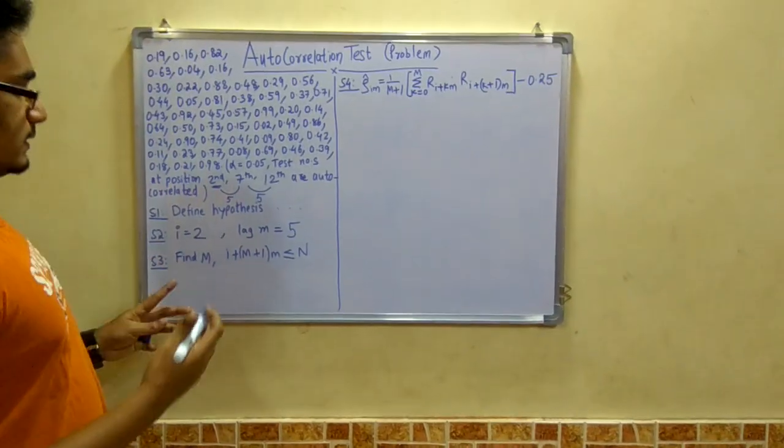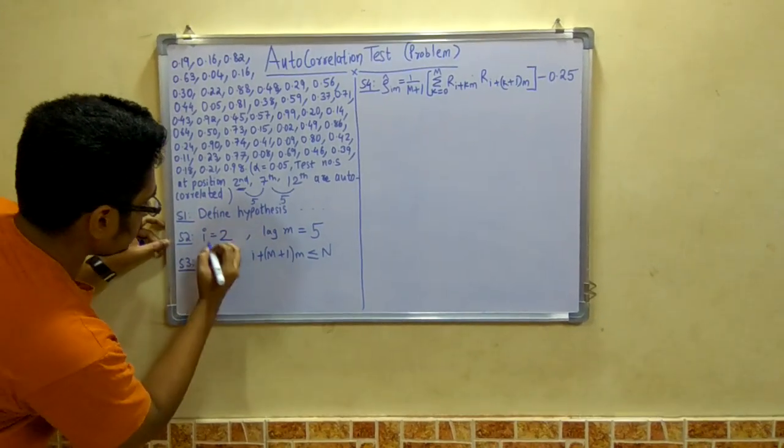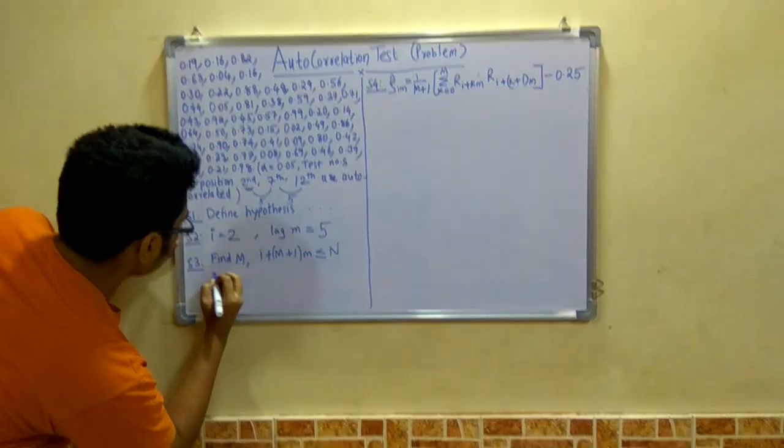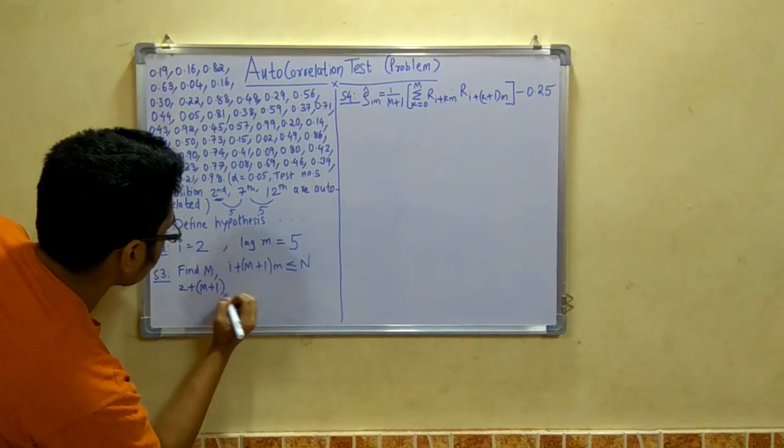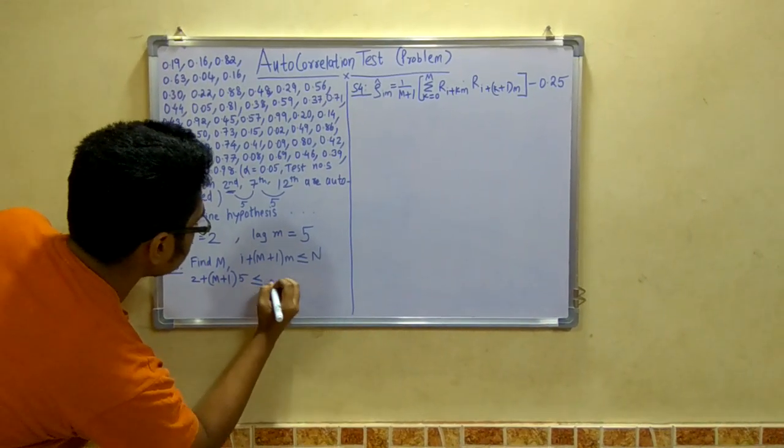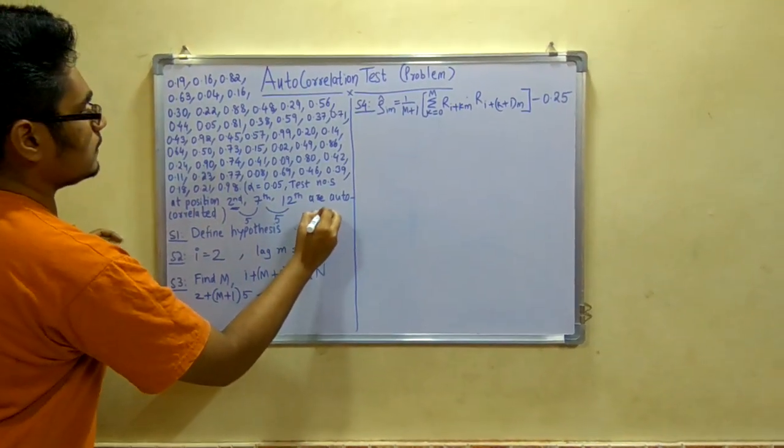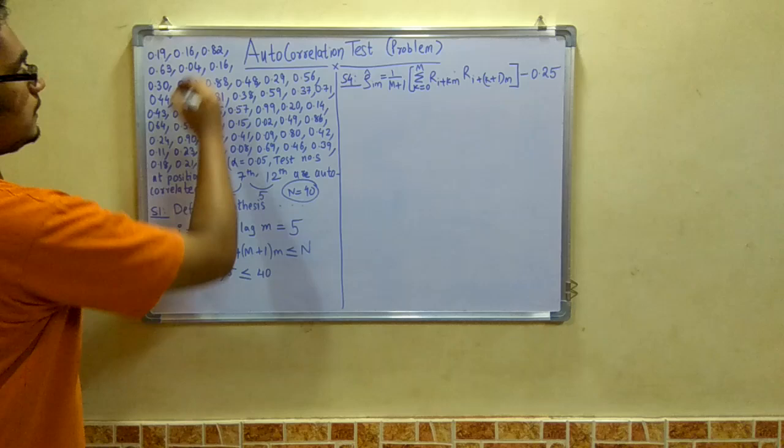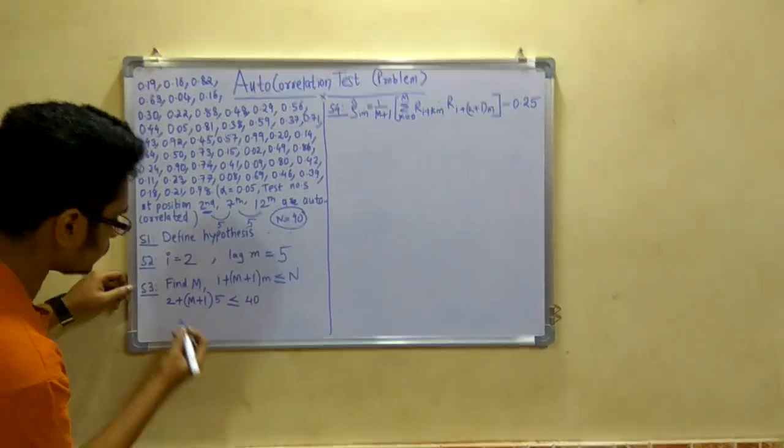Next step is to determine the value of M, that is the largest integer. So for that let us write. We have i as 2. So 2 plus m plus 1, this M we have to determine, small m is 5 less than equal to 40. 40 because n is 40. We have 40 numbers in total. These numbers are 40 numbers.